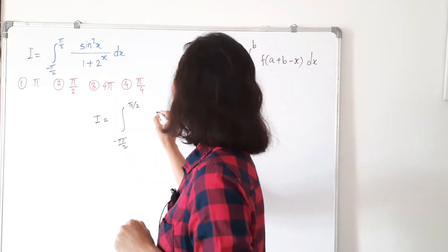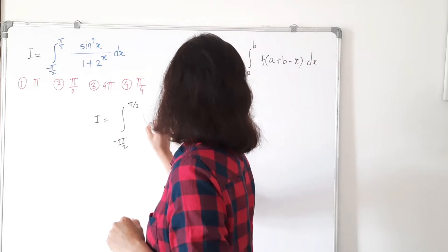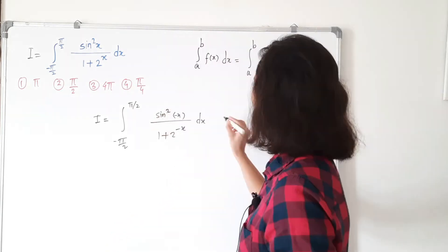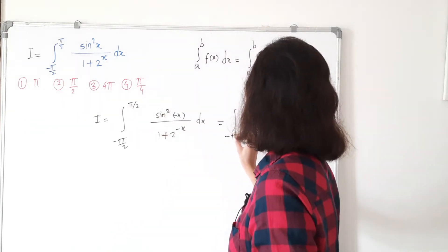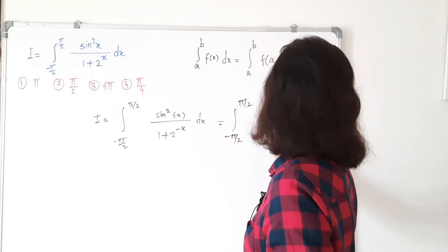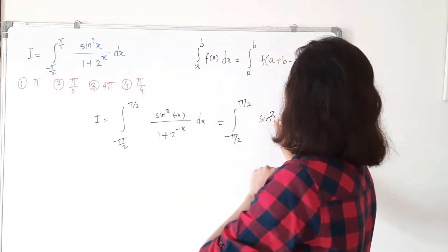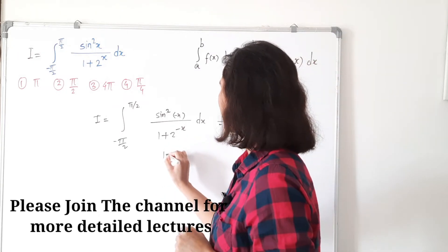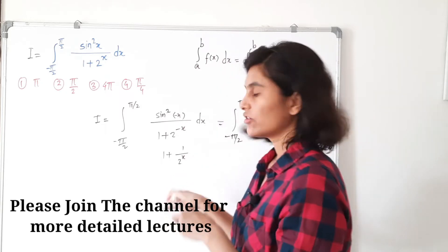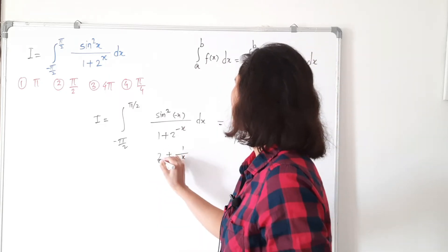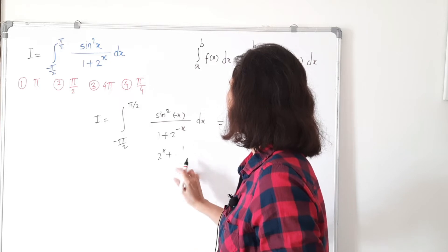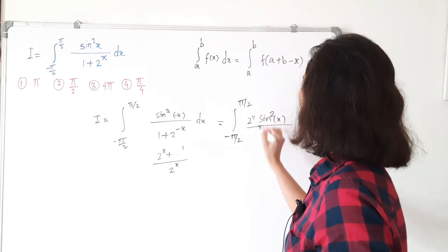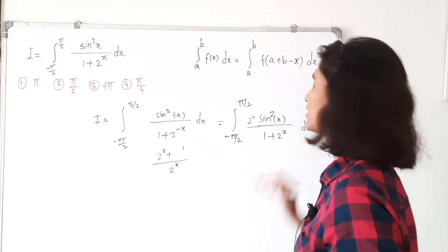So what is f(−x)? It is sin²(−x) divided by 1 plus 2 raised to −x, which gives the integration from minus π/2 to π/2. Now sin²(−x) is the same as sin²x, and 1 plus 2 raised to −x is the same as 1 plus 1 divided by 2 raised to x, which simplifies to (2^x + 1) divided by 2^x. So this becomes 2^x divided by (1 plus 2^x).